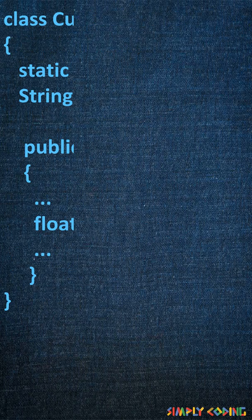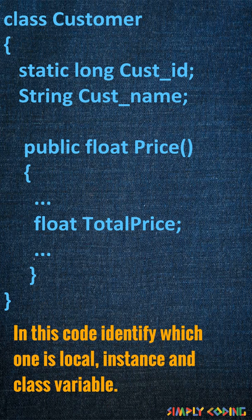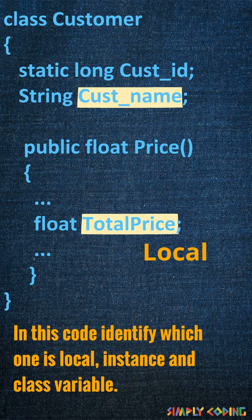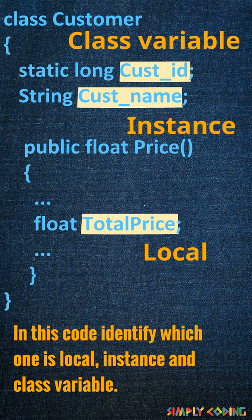Let's look at another example. In this code, identify which variables are local, instance, and class variables. The variable used inside the method is the local variable. The variable which is outside the method in the class and has a separate copy for each instance of the class is called an instance variable. Variables which are declared static and have a single copy irrespective of the number of instances of the class are called class variables.